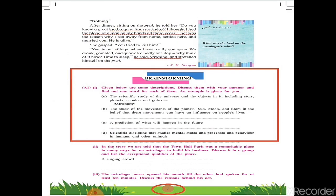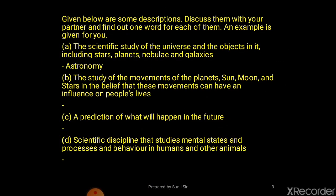Here you see in the box the question which we are going to discuss, and the circle shows the page number. Let's see the first question: given below are some descriptions, discuss them with your partner and find out one word for each of them. An example is given for you. A: the scientific study of the universe and the objects in it, including stars, planets, nebulae, and galaxies.